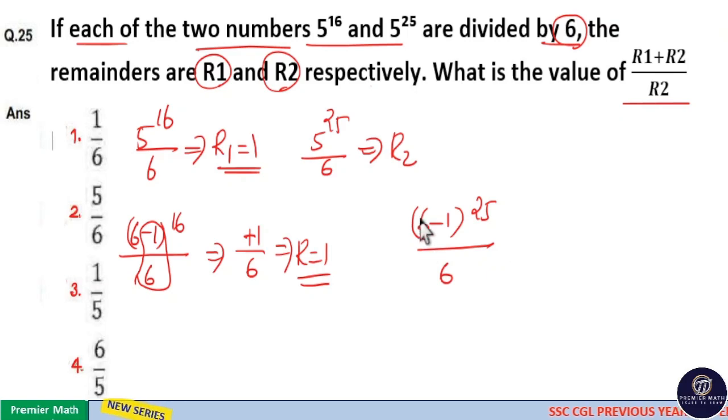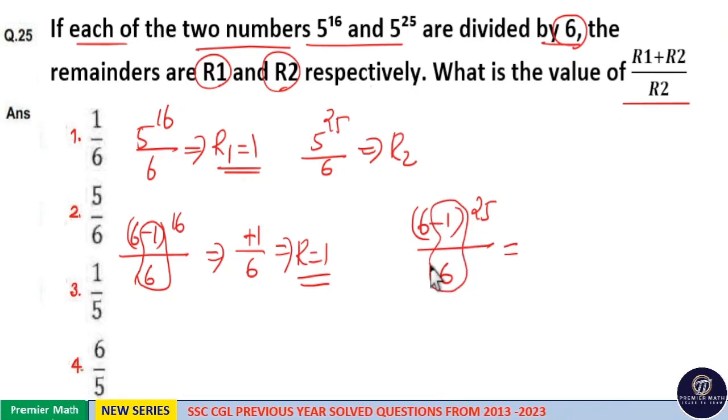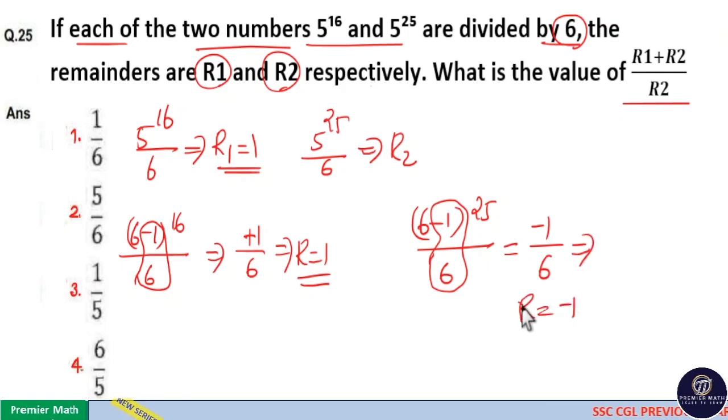Here 6 raised to 25 by 6. There is no remainder. But minus 1 raised to 25. Minus 1 raised to 25 is minus 1. So minus 1 by 6. So remainder cannot be minus 1. This is wrong.